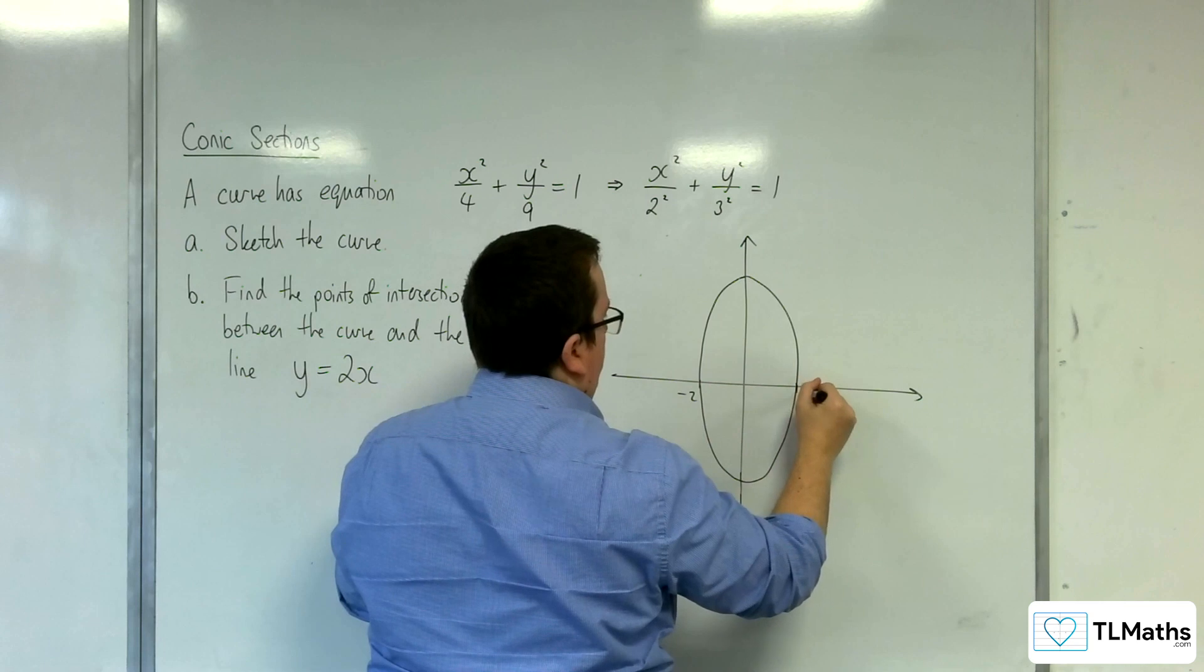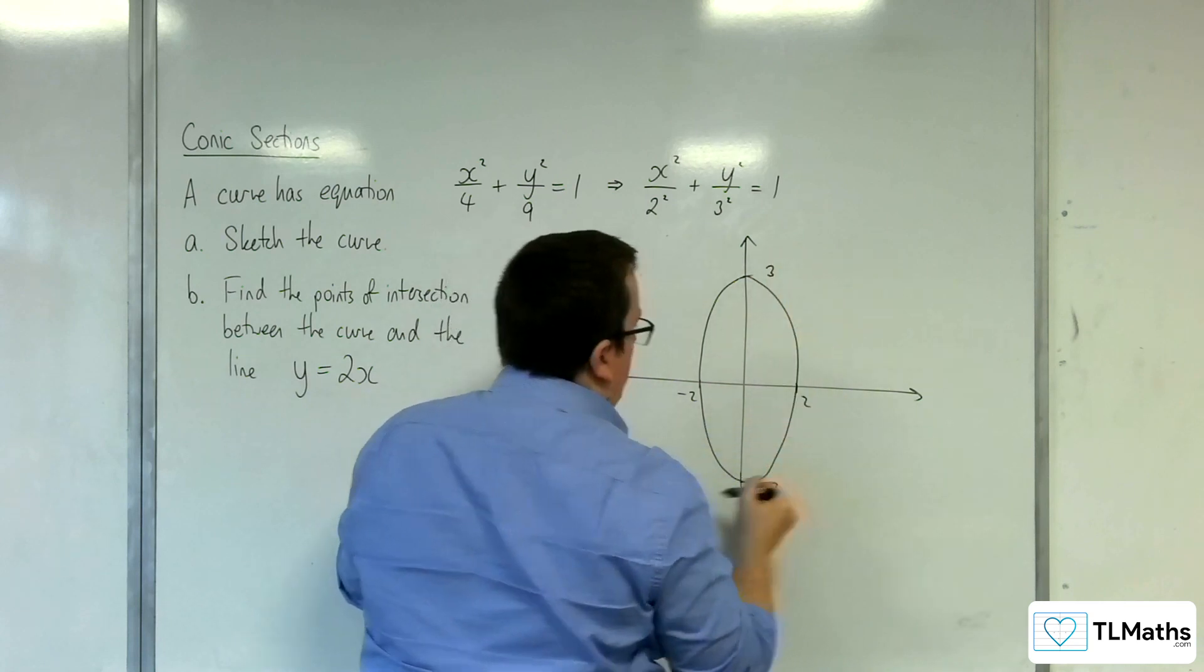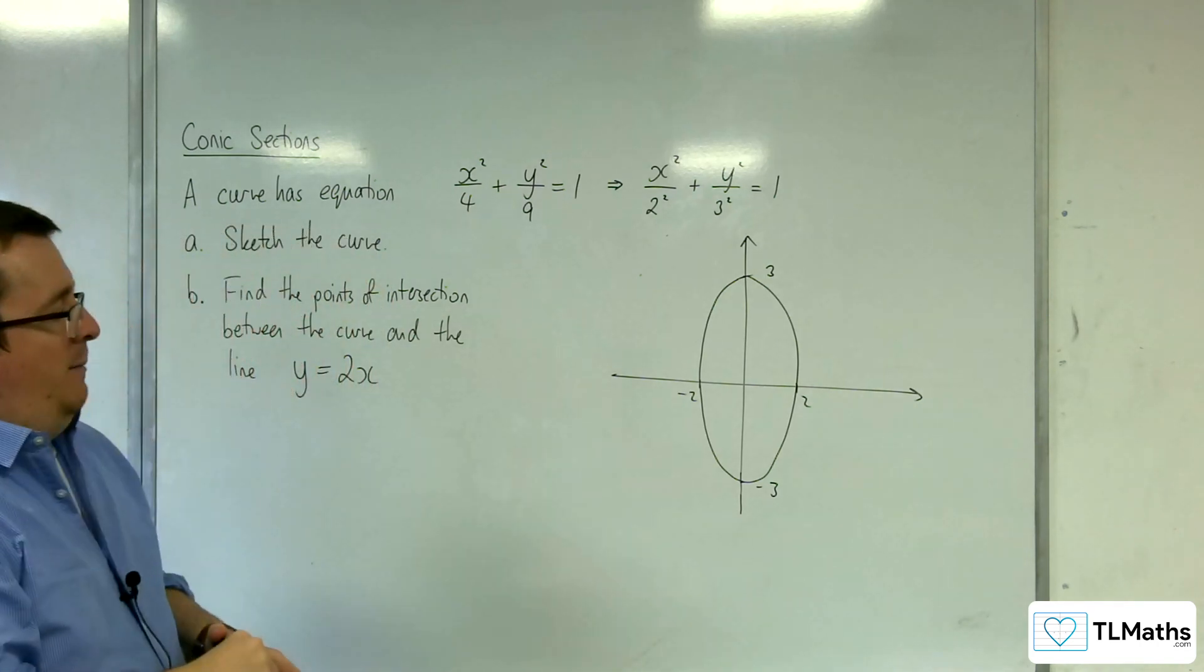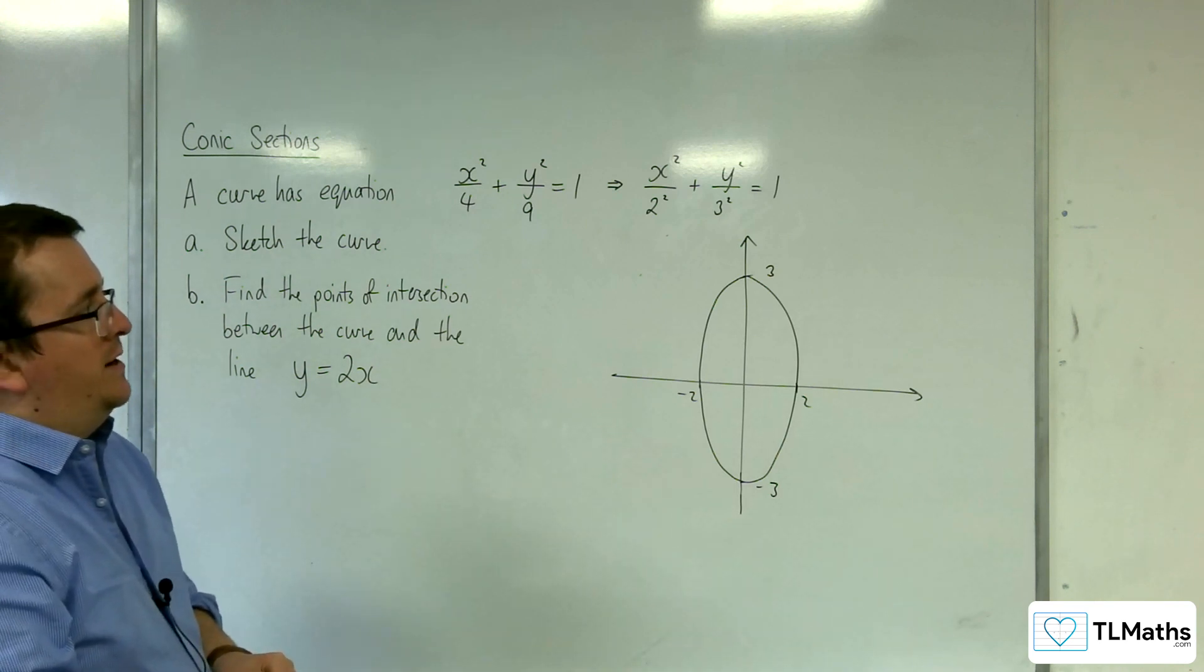So that's minus 2 and that's 2. So don't worry too much if yours looks kind of as rubbish as mine. It's more kind of like potato-shaped. Ellipses are quite challenging to draw. So that's what our curve would look like.